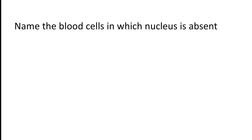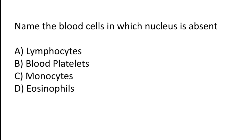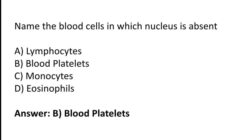Name the blood cells in which the nucleus is absent. Options: lymphocytes, blood platelets, monocytes, or eosinophils? The correct answer is option B — blood platelets are the blood cells in which the nucleus is absent.